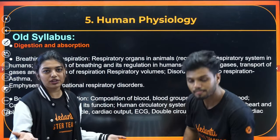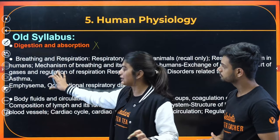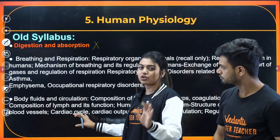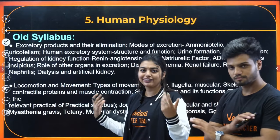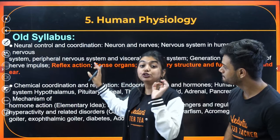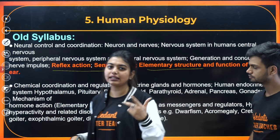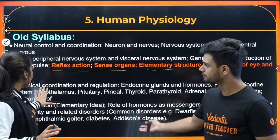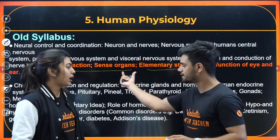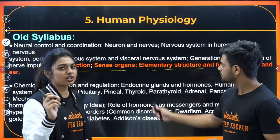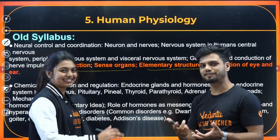Human physiology is a very important unit as a whole. Here, Digestion and Absorption is completely removed — this entire chapter is gone. Breathing and Respiration: no changes. Body Fluids: no changes. Excretory Products: no changes. Locomotion and Movement: no changes. Neural Control: the reflex action section through to sense organs — elementary structures, function of eye and ears — are completely removed. Chemical Coordination: nothing changes, it remains the same — a very important chapter. So entirely one chapter has been removed and one small concept from neural control. This is a benefit for you, but there's a catch — other topics will be focused on more heavily when such important concepts are removed.